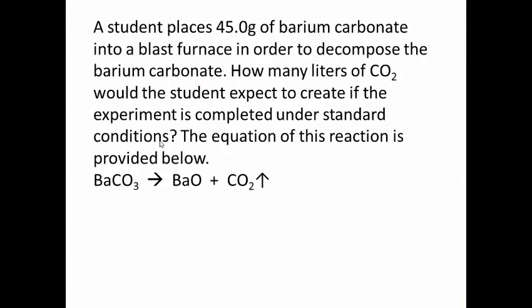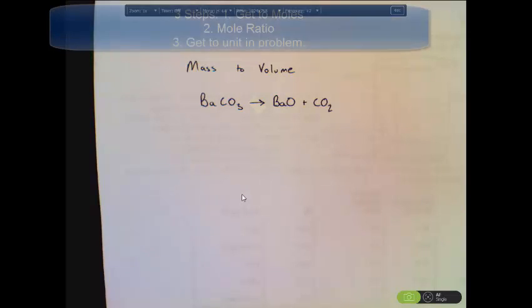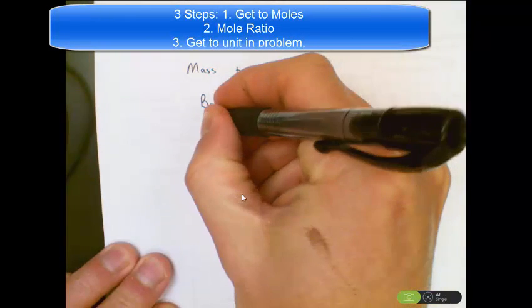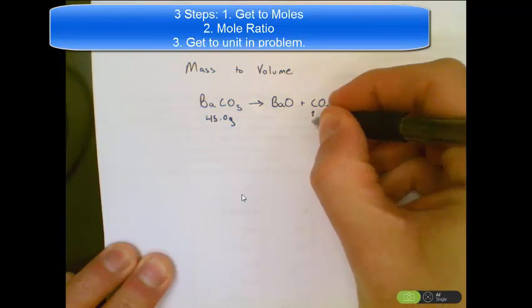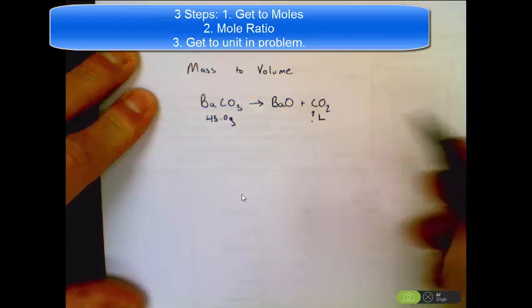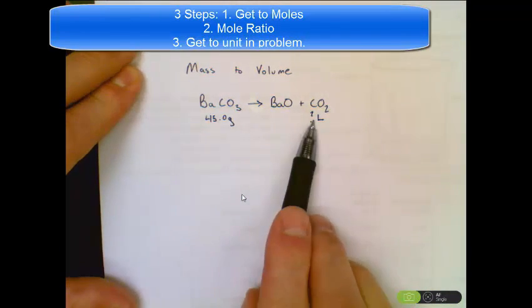That's a mass-to-mass problem. We can try a mass-to-volume problem. I'm given 45.0 grams of barium carbonate, and I need to find how many liters of CO2 form. I'll write those values underneath the appropriate substances in the balanced chemical equation. This is a mass-to-volume problem — starting with mass and finishing with volume — using the same three steps: get to moles, stack your moles, get to the unit in the problem.